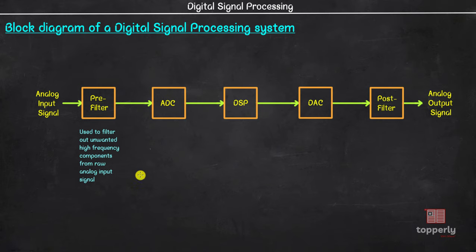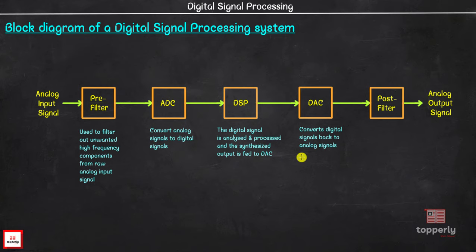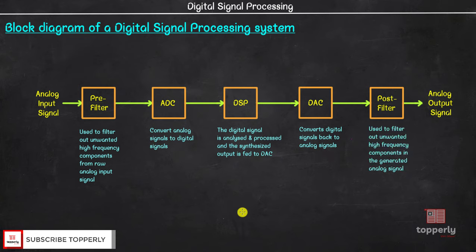Next the ADC will convert analog signals to digital signals. Then these signals are fed to the DSP where it is analyzed and processed and the synthesized output is fed to the DAC. The DAC converts digital signals back into analog signals. And finally, this post filter is used to filter out any unwanted high-frequency components in the generated analog signal. Now most often, we also provide an amplifier at the beginning and at the end. This is to amplify the incoming and outgoing signals.